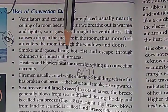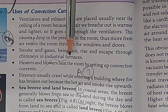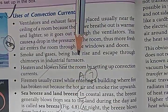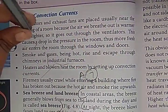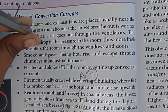Smoke and gases, being hot, rise and escape through the chimney — this is an example of convection in an industrial furnace. The hot air and smoke rise up through the chimney, and as pressure drops, cold air comes in to replace it.